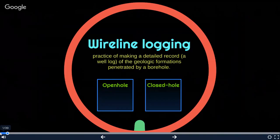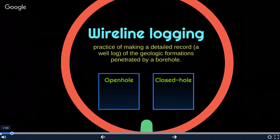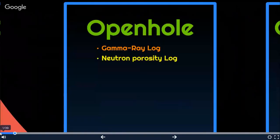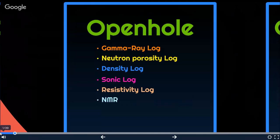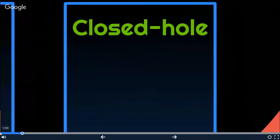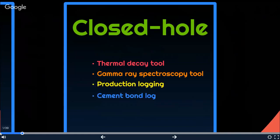The wireline logging tools are divided into two main groups: open hole and closed hole. Open hole include gamma ray log, neutron porosity log, density log, sonic log, resistivity log, NMR which is nuclear magnetic resonance, image log and formation test. As for the closed hole, we have thermal decay tool, gamma ray spectroscopy tool, production logging, cement bond log and casing collar locator.